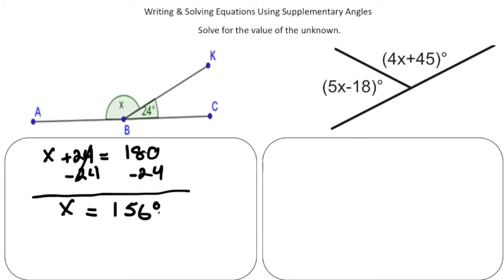When we do this, we get x = 156 degrees. Make sure you include the degree symbol. This one over here is a little more complex. Again, we know that this angle here and then this angle here together are supplementary.